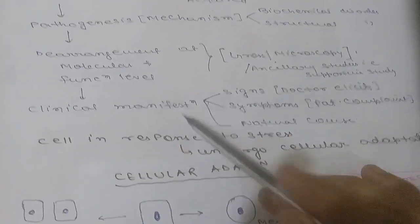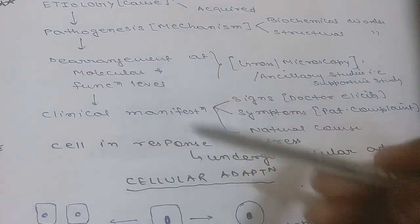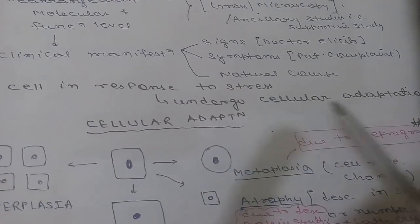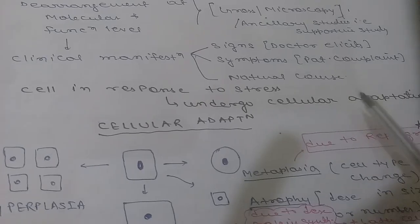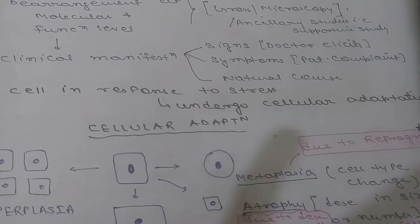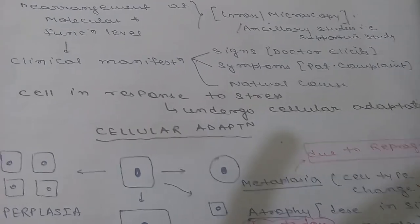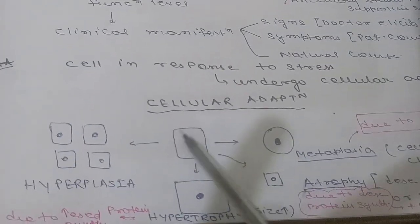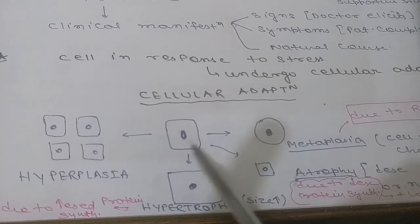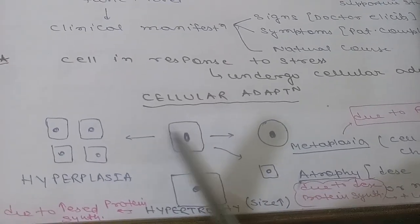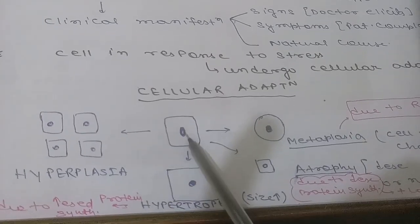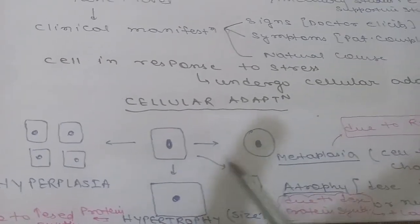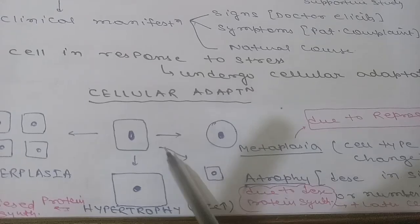These four things — etiology, pathogenesis, structural changes, and clinical manifestations — are what we look for in any disease. A cell in response to stress undergoes cellular adaptation. If able to adapt, it survives. If not, it undergoes necrosis or apoptosis. A cell under stress can increase its number (hyperplasia), increase its size (hypertrophy), or change its shape (metaplasia).